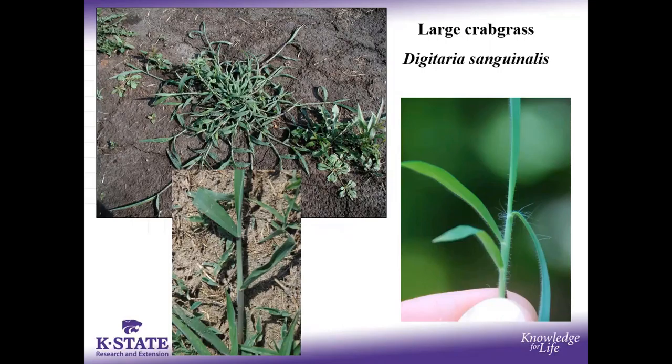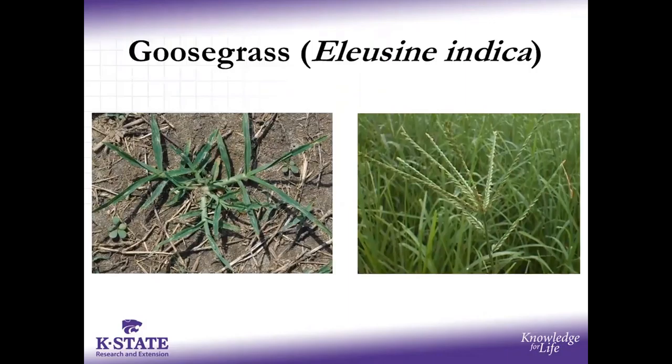Large crabgrass is very similar to smooth crabgrass but has hairs and also roots at the node — where it bends. The same herbicides that work on large crabgrass work on smooth crabgrass. The main difference is the size of the hairs at the ligule area: smooth crabgrass has small hairs while large crabgrass has big hairs right at that ligule area.